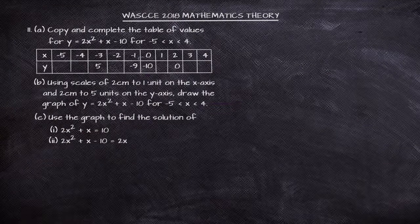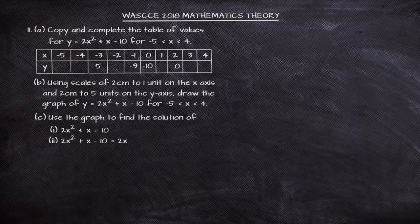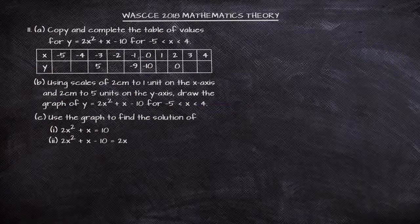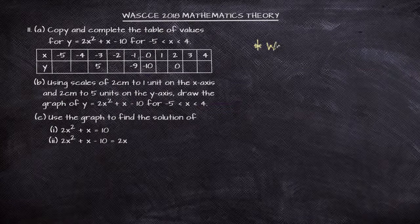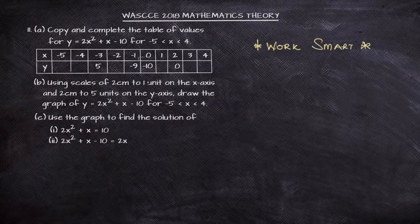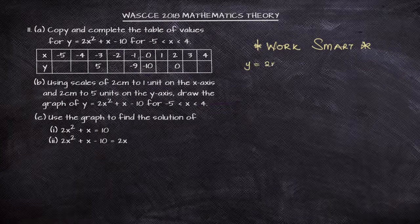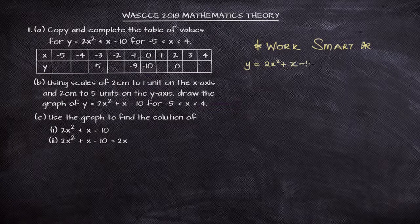We are given y equals 2x squared plus x minus 10, and we are to complete this table for the values of x between minus 5 and 4, inclusive. Now, that table is given to us. What I will advocate for is that you need to work smartly. You don't need to stress yourself giving yourself a lot of headache, like saying you want to be substituting each value of x.